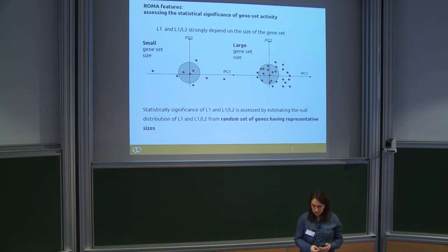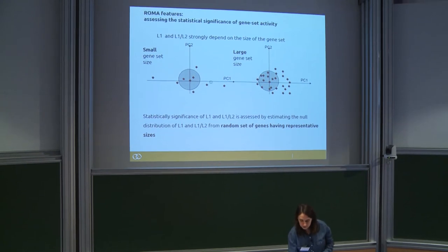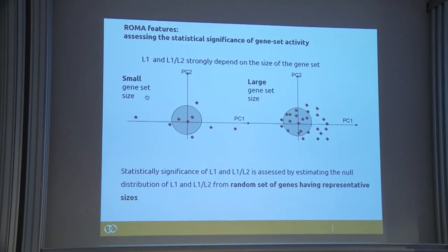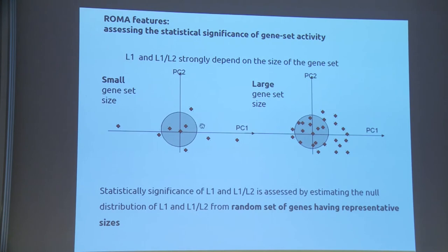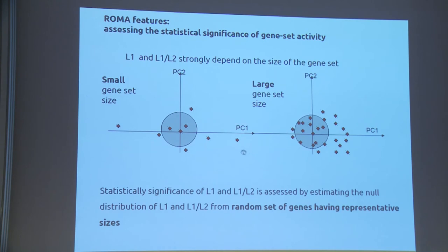There are several statistical features we account for. A very small gene set is more likely to show high variance by chance, and so L1 variance really depends on set size. We avoid bias from small sets by assessing the null distribution: we keep random sets of genes of the same size and test their variance. For small sets, these random sets typically show the same variance as the one being tested.